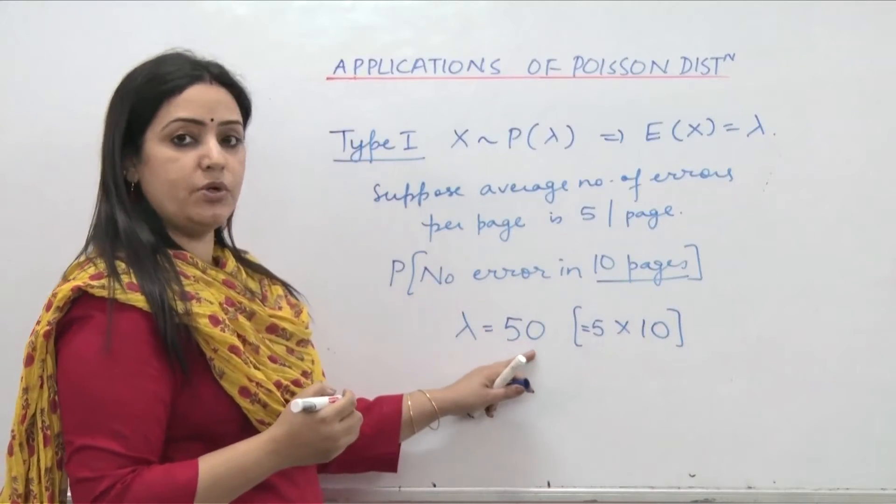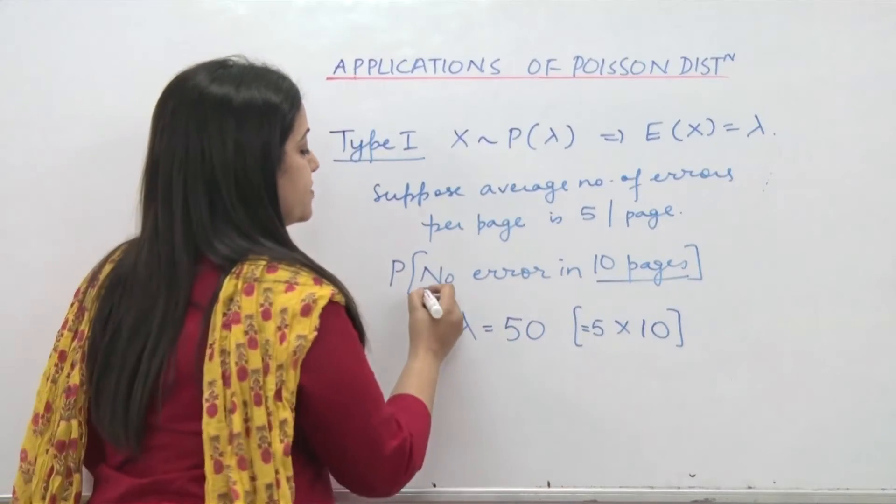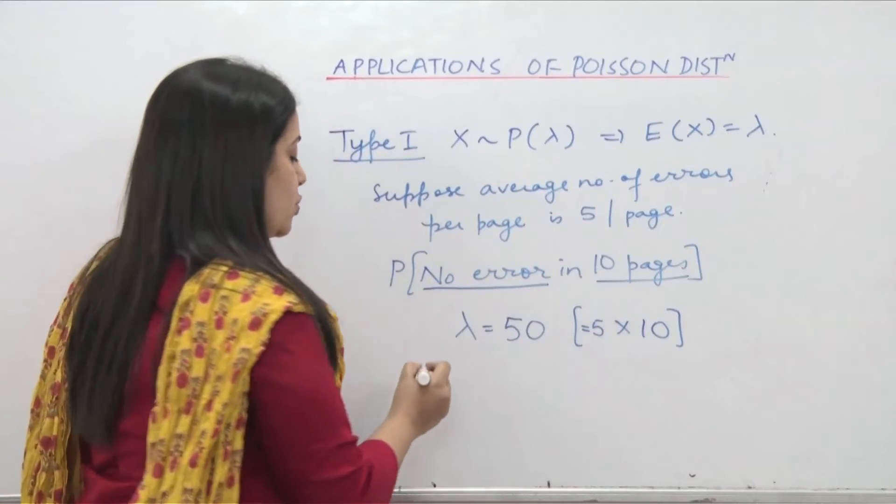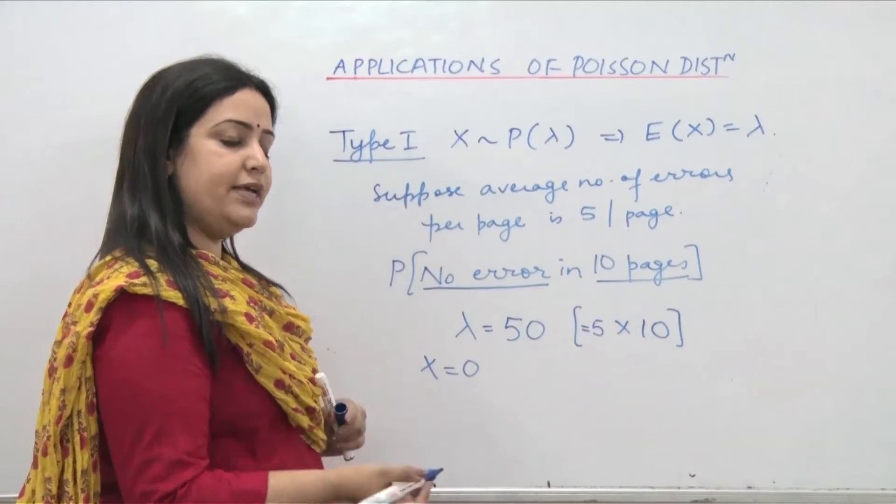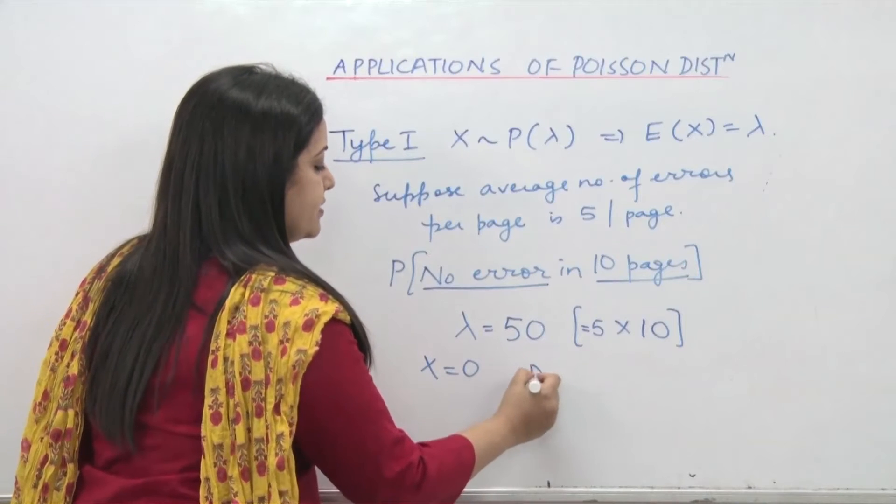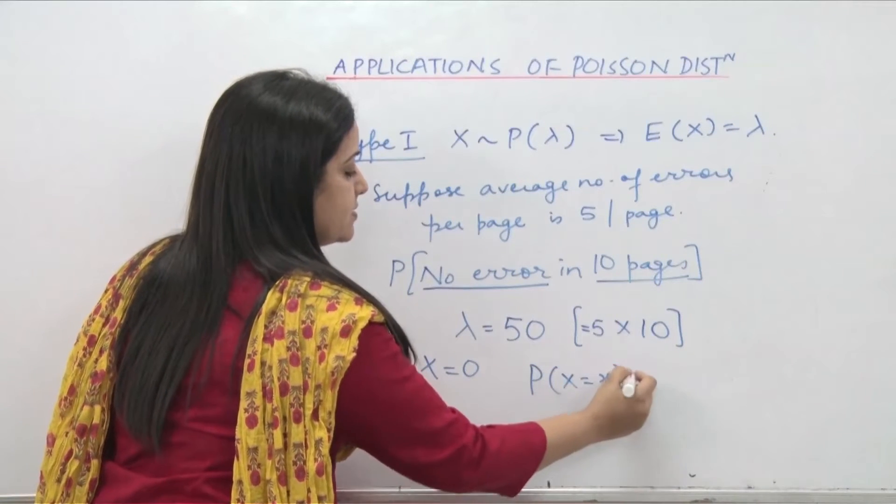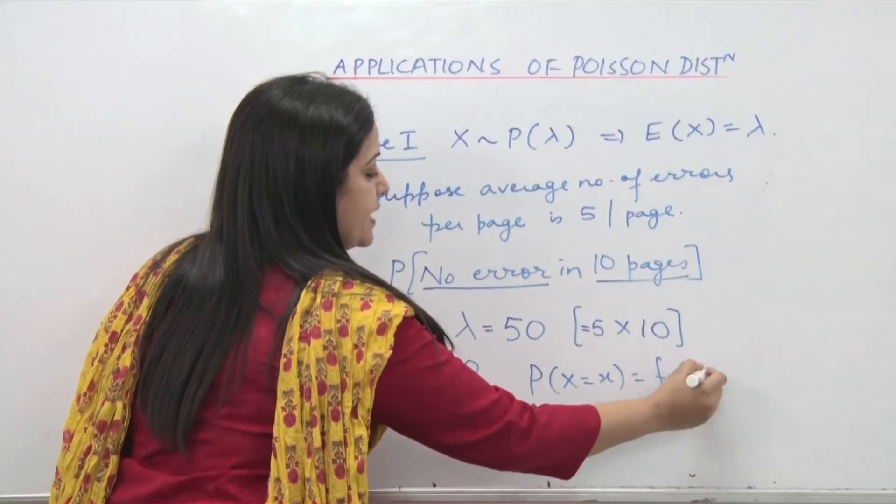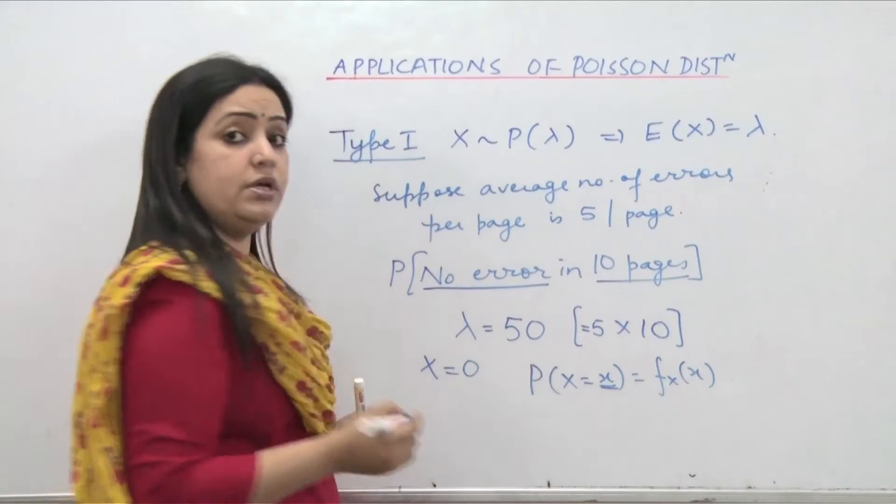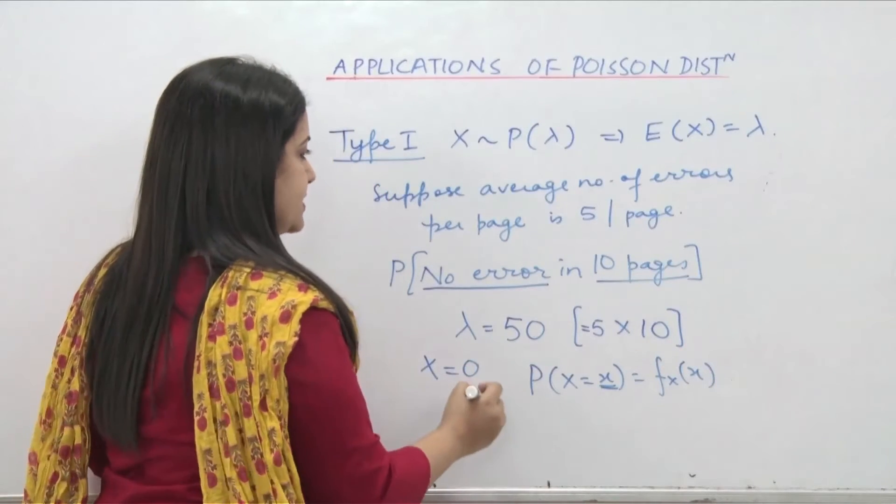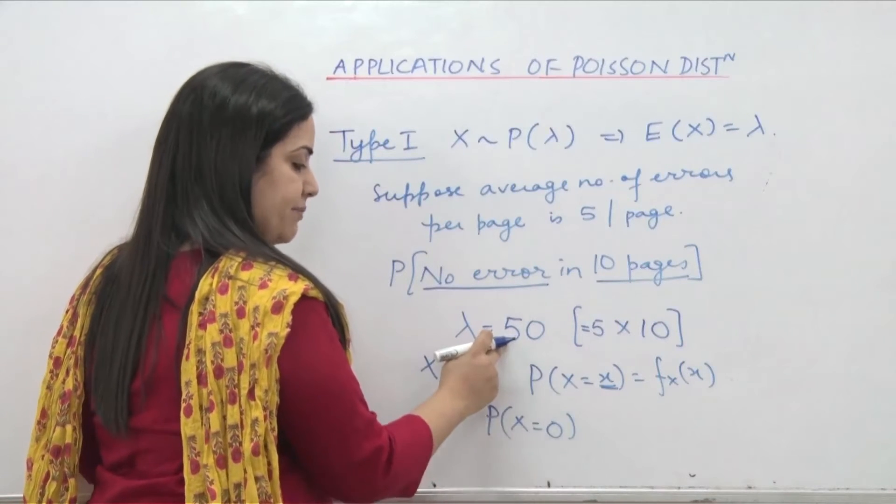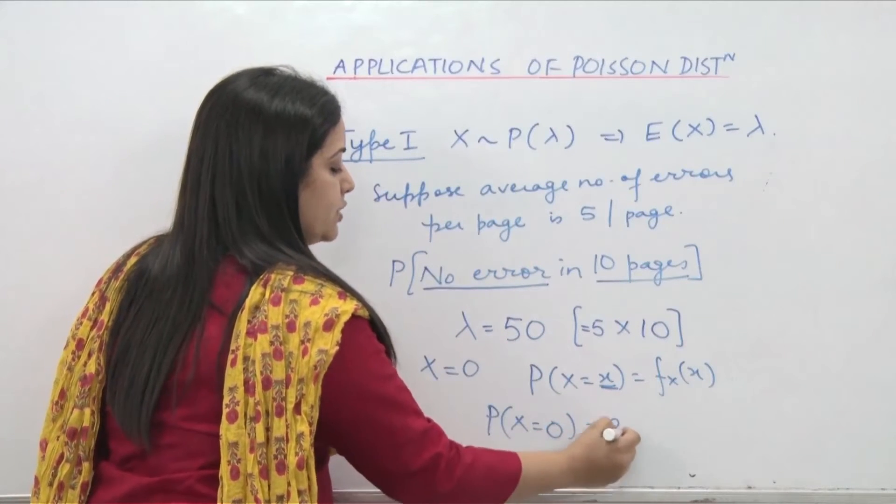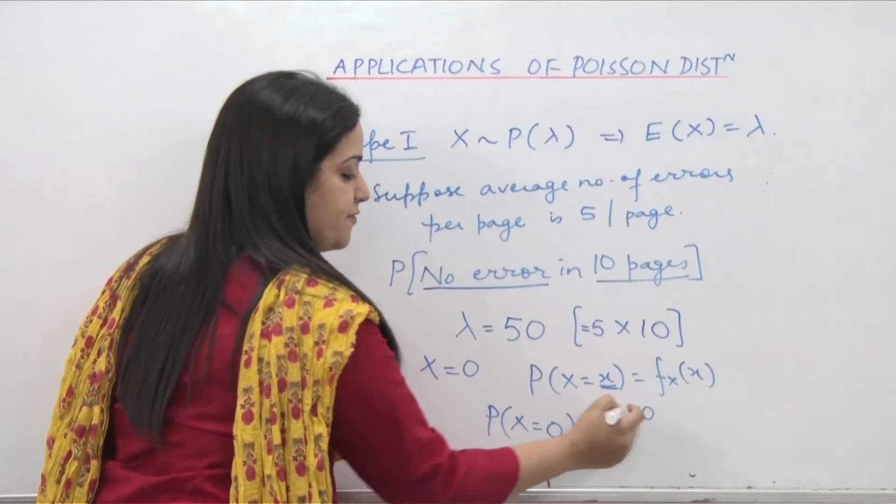So we take lambda to be equal to 50. And we are now interested in probability of no error. So we want x to be equal to 0. Now we simply use its fxx which is probability x equal to x and x equal to 0. So what is the answer? Probability x equal to 0 with this lambda will become e to the power minus 50.